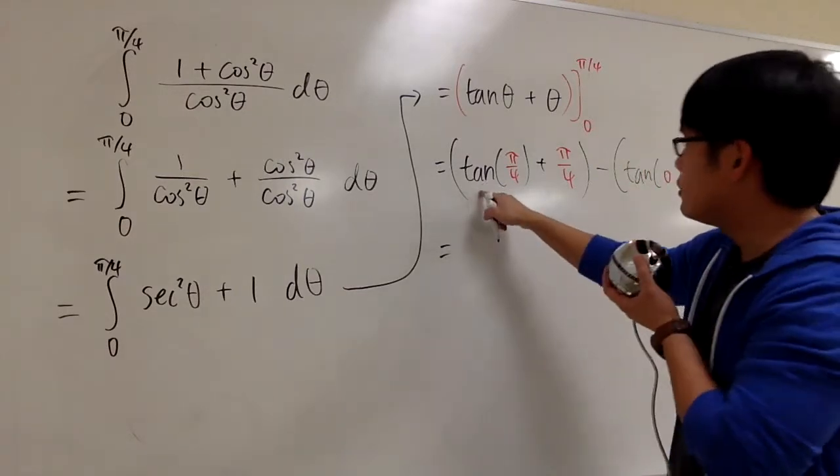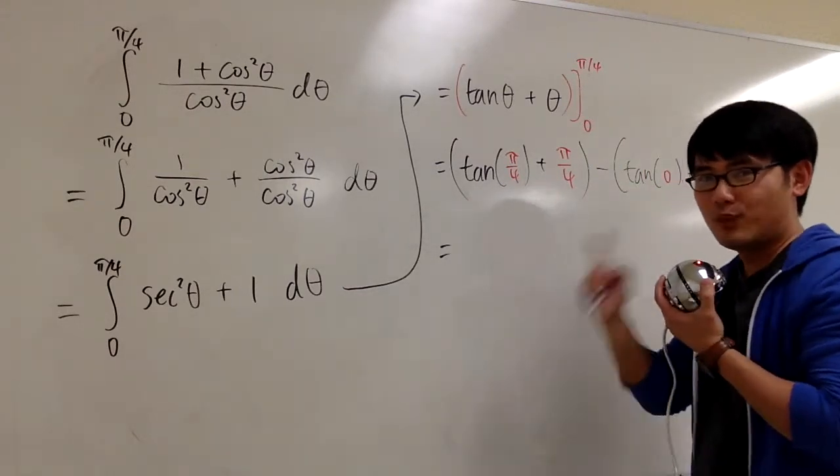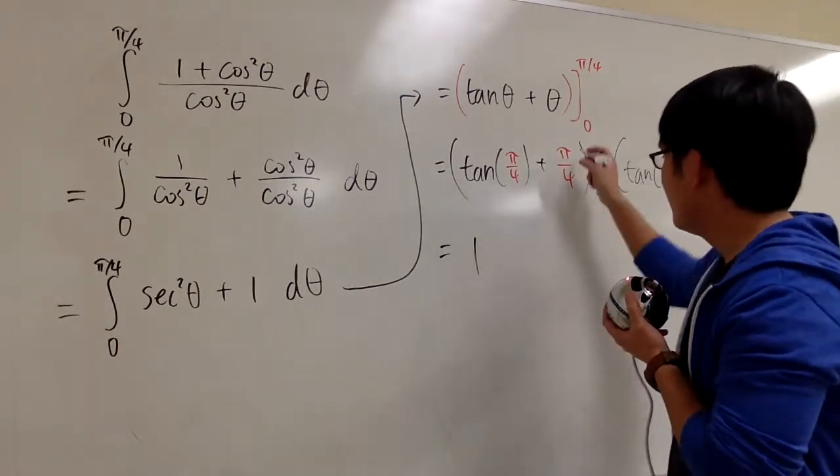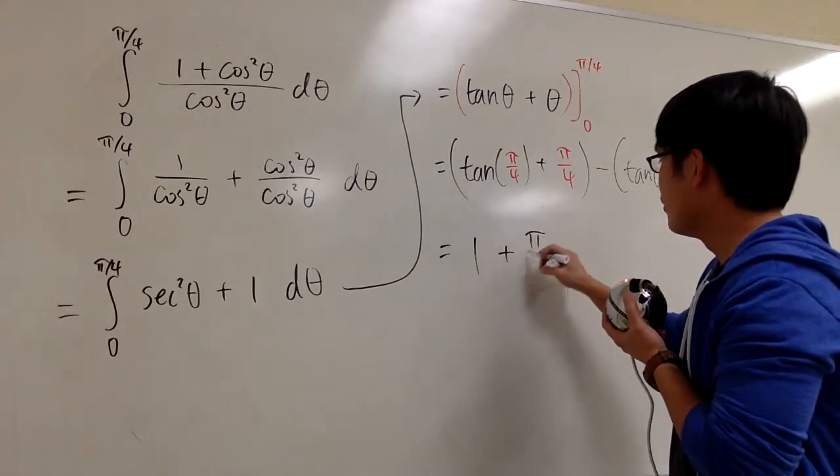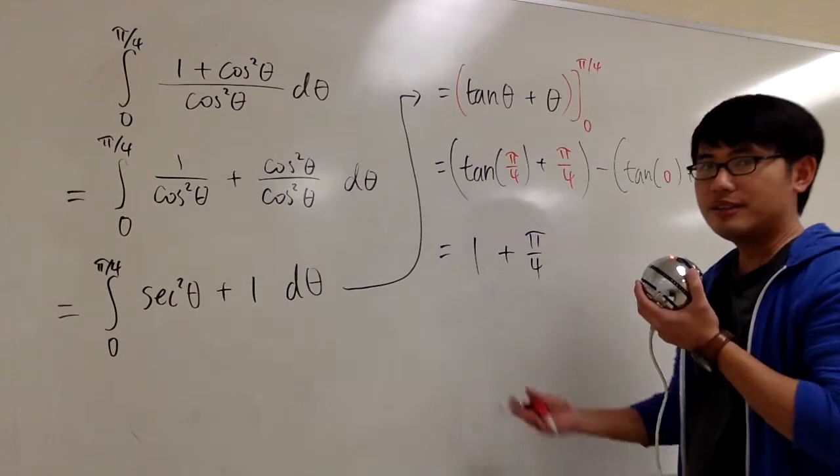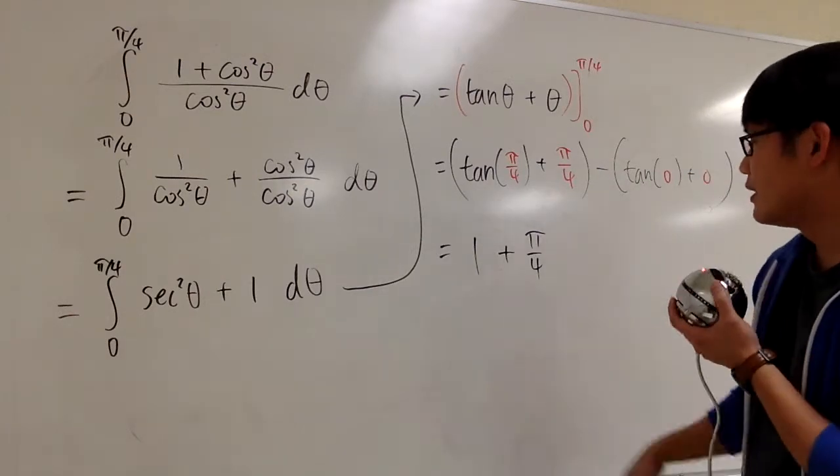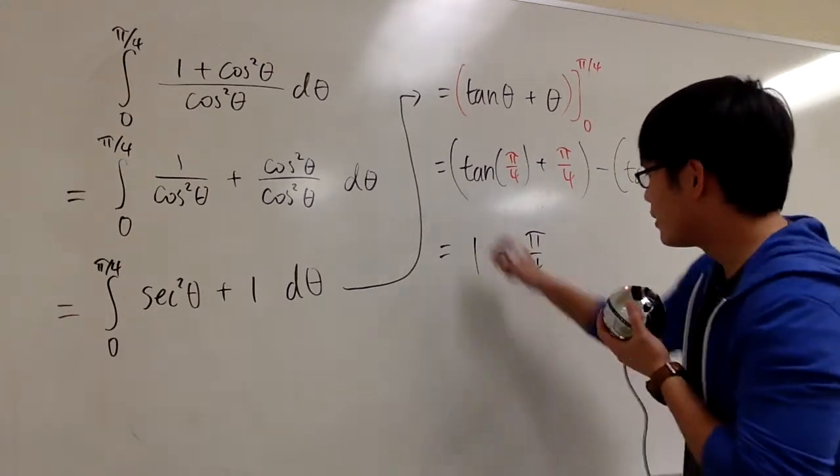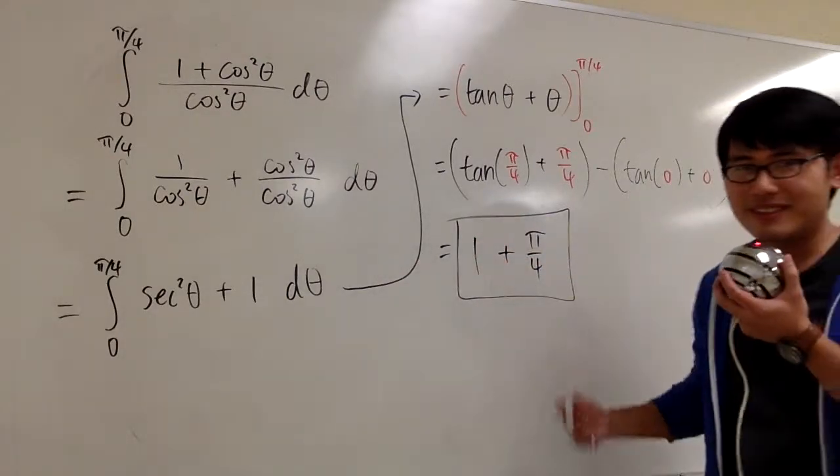And now what's tangent pi over 4? Tangent pi over 4 is just 1. So here we have 1. And here we have pi over 4. And this is okay. This is totally fine for the answer. So 1 plus pi over 4. You can just box this for the answer. That's it.